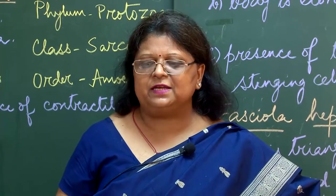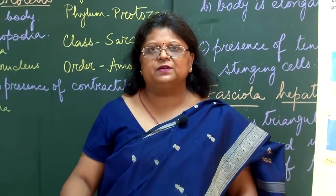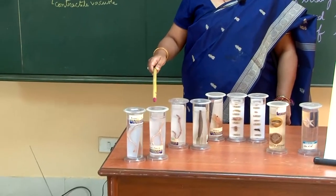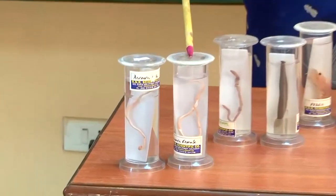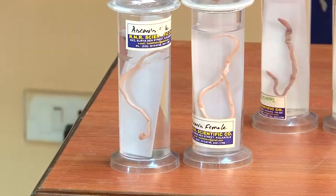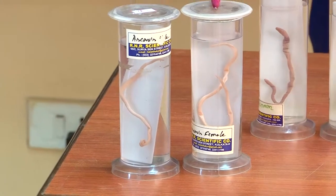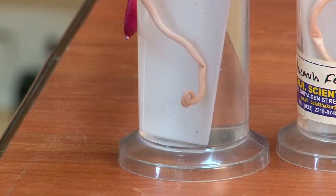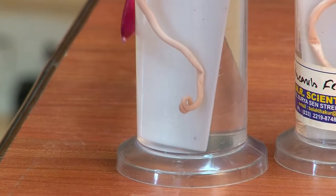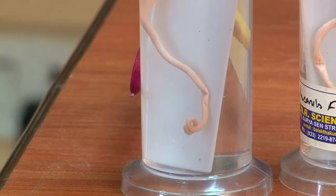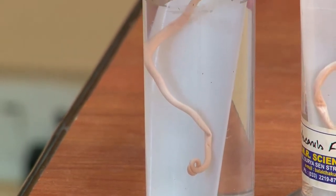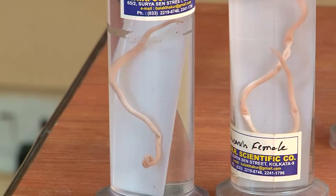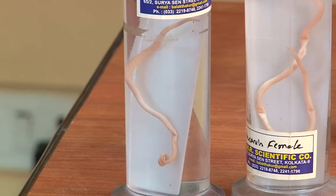Continuing our study with more invertebrates — these two specimens belong to nematodes, or Nemathelminths, or roundworms. They are parasites, they are endoparasites — we call them Ascaris. They are long, slender, bilaterally symmetrical, and they have got a thin membrane. They also have suckers to get hold of nutrients from your body.